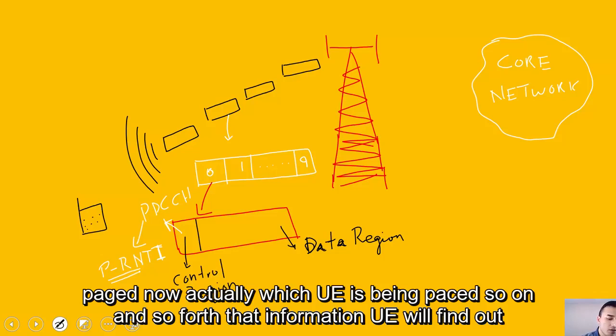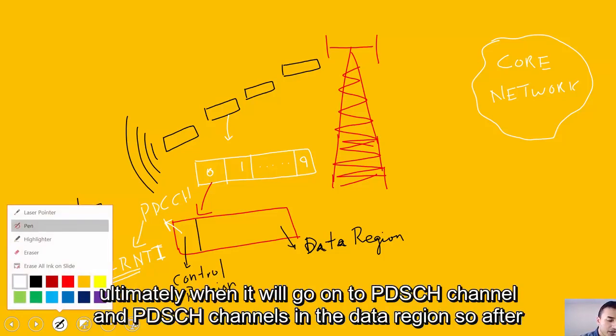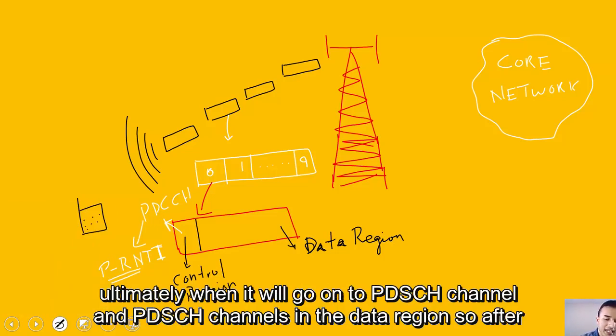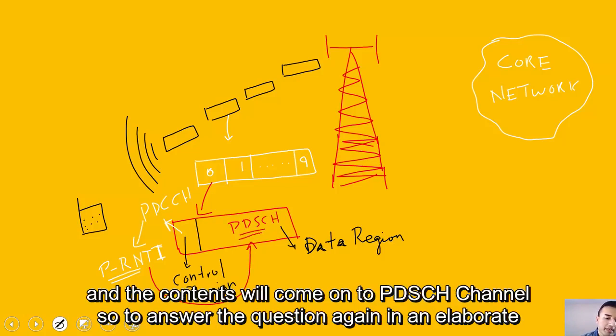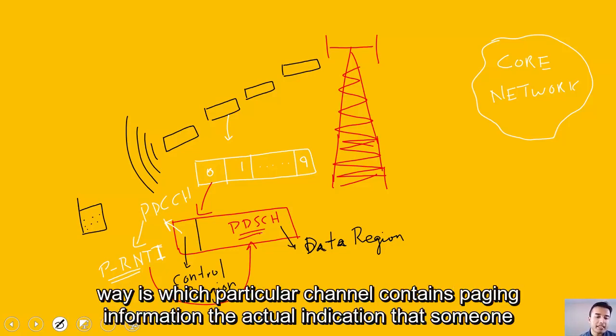Which UE is being paged and so forth, that information UE will find out ultimately when it will go on to PDSCH channel, and PDSCH channel is in the data region. After reading this P-RNTI, UE will go on to PDSCH channel, and the actual user which has been paged and the contents will come on to PDSCH channel.